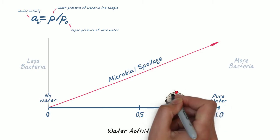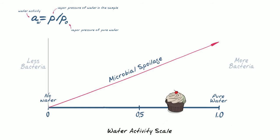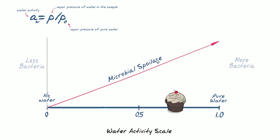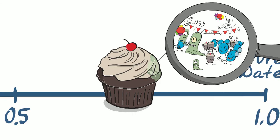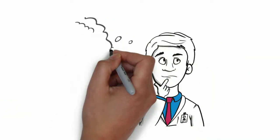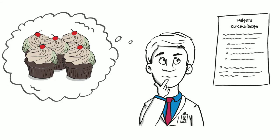In relation to cupcakes, a water activity measurement of 0.5 or lower would mean the likelihood of microbial growth is very low. In Walter's cupcakes, which measured at 0.78 AW, it appears too many water molecules are unbound, facilitating mold growth.